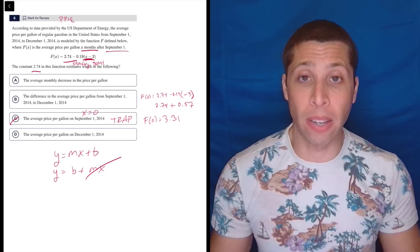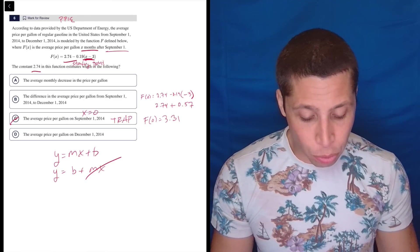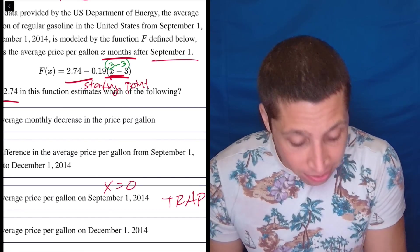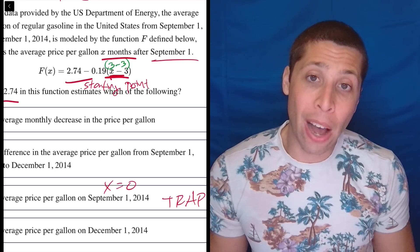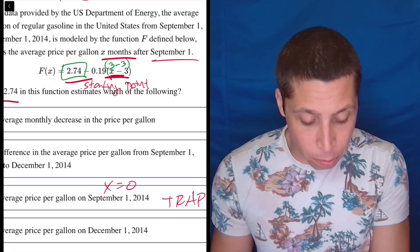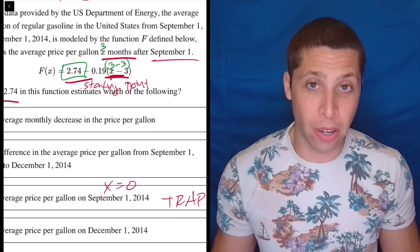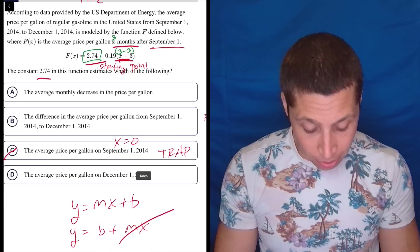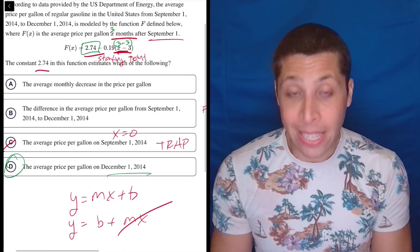But what would cause that piece to disappear? What would allow us to just look at 2.74 by itself? Well, if x were 3, 3 minus 3 is 0, so then this would knock out. And then we would just be left with the 2.74. Why would x be 3? Well, that would be 3 months after September 1st. So October, November, December. December. D is the answer.